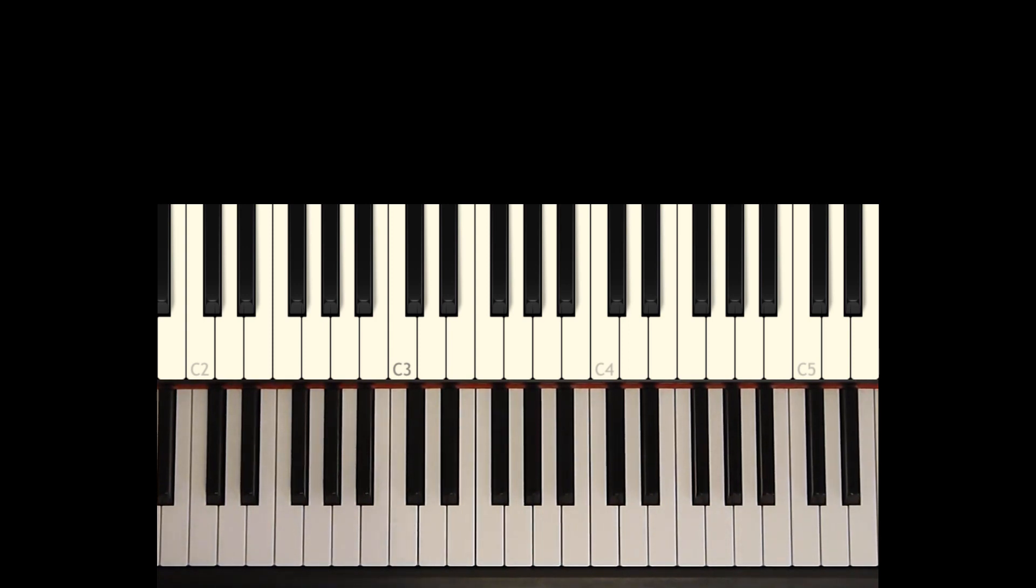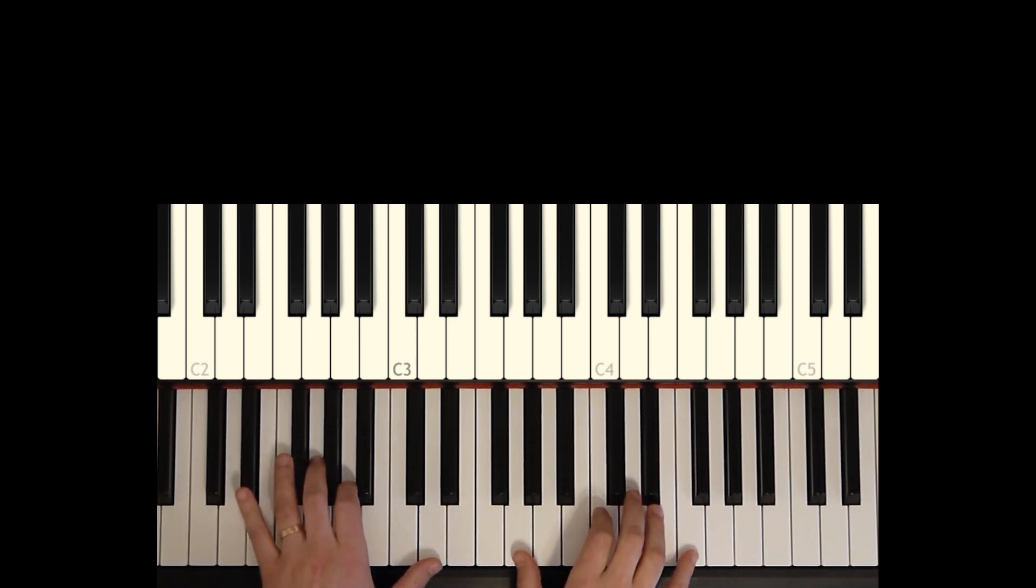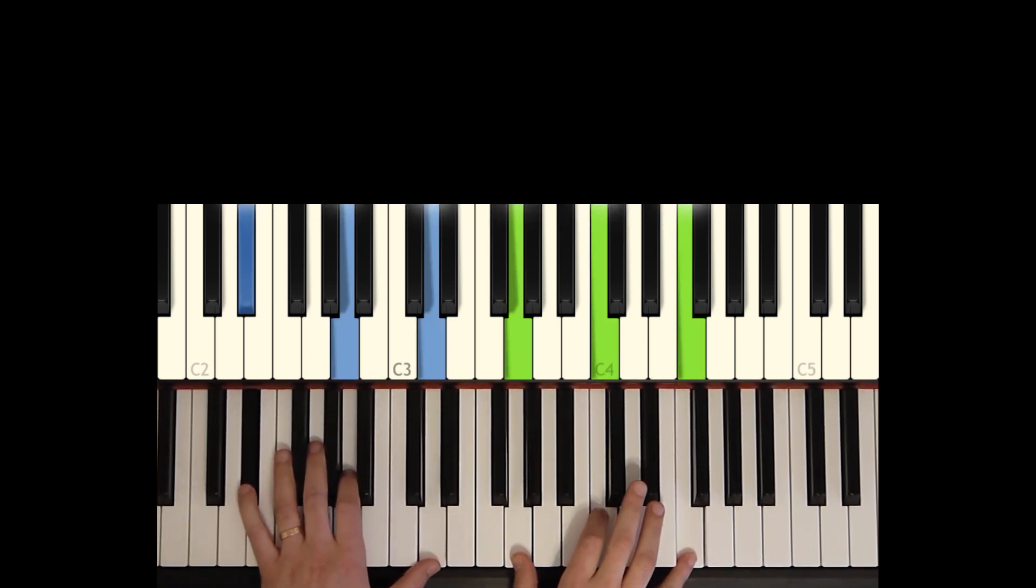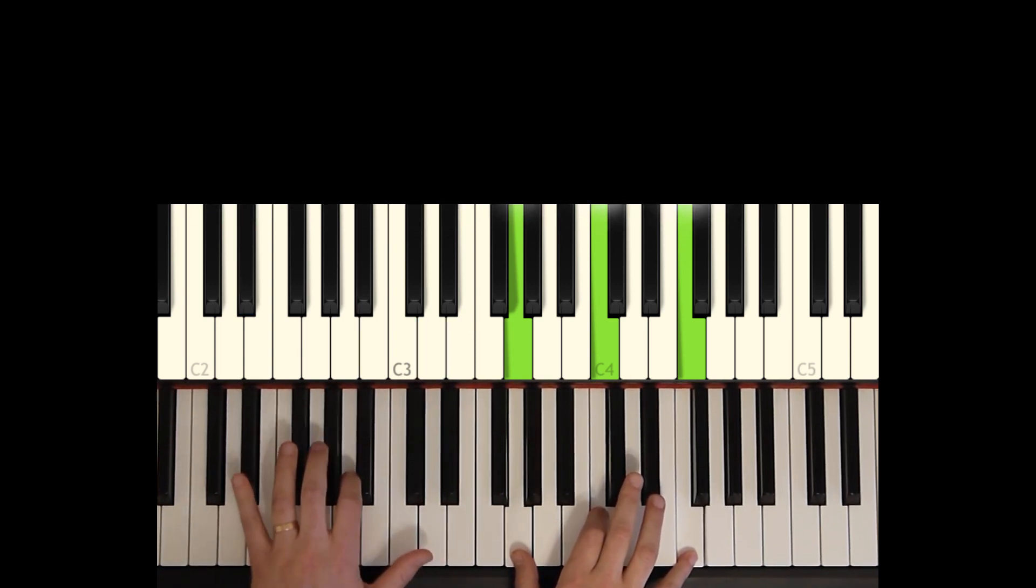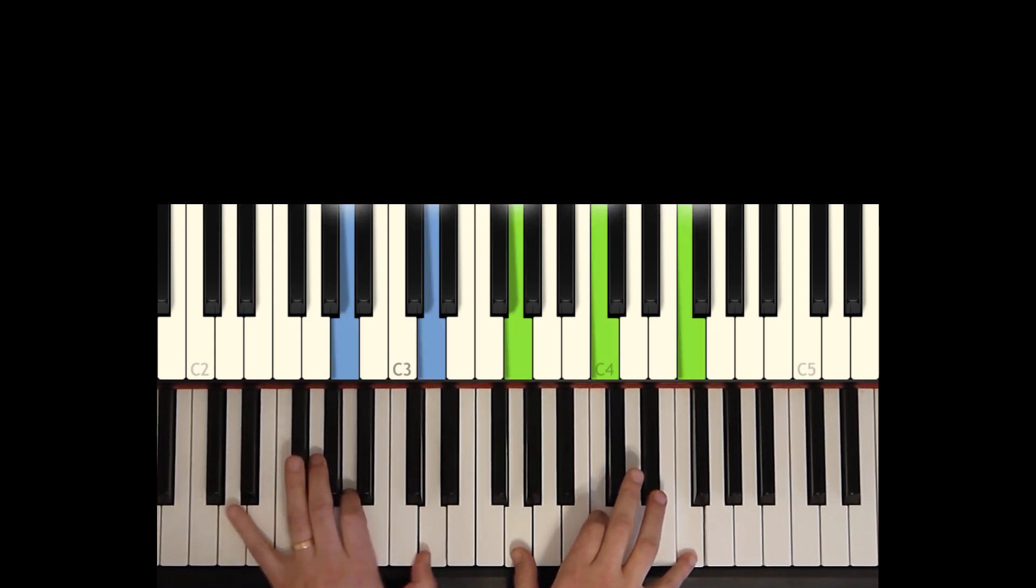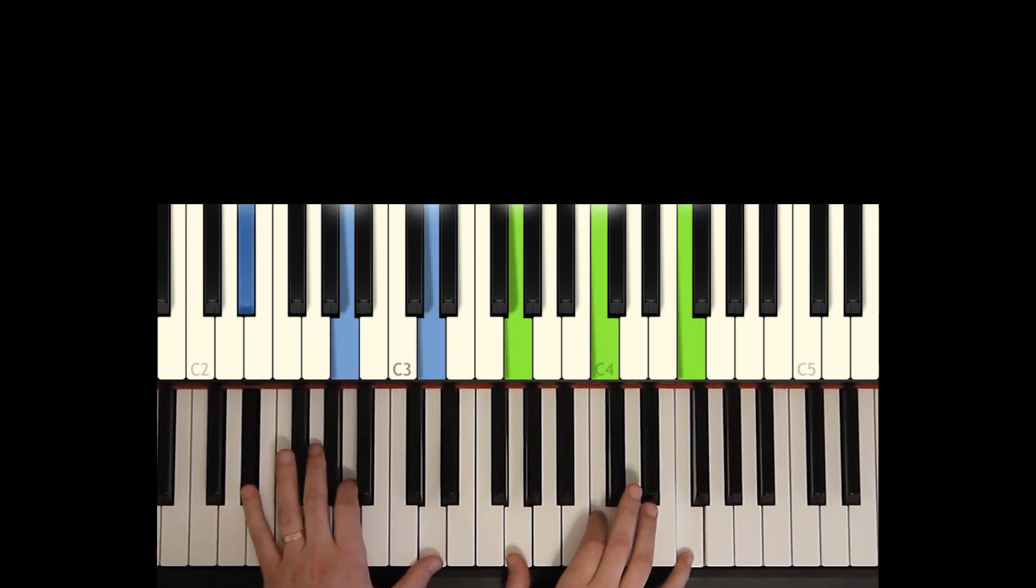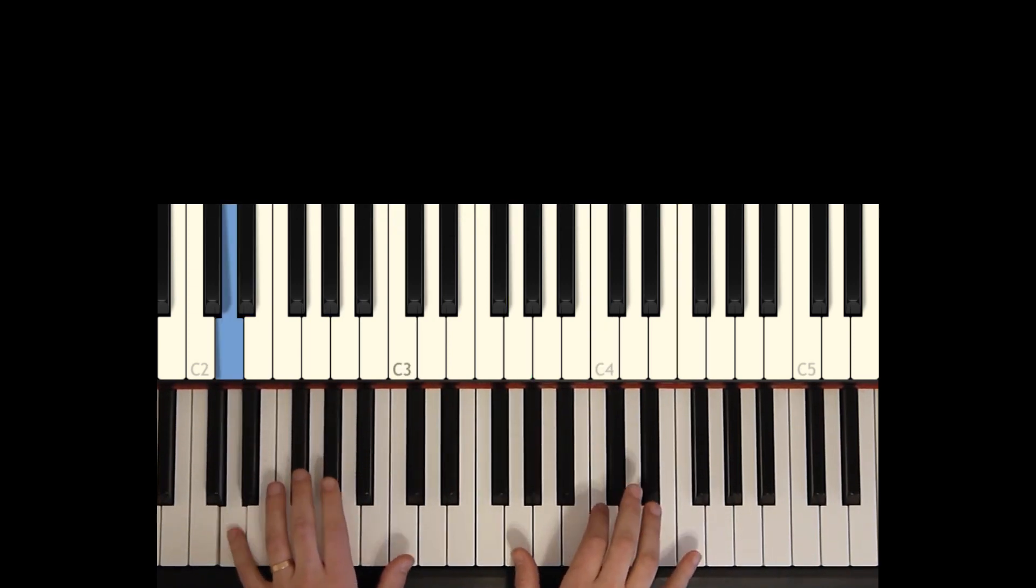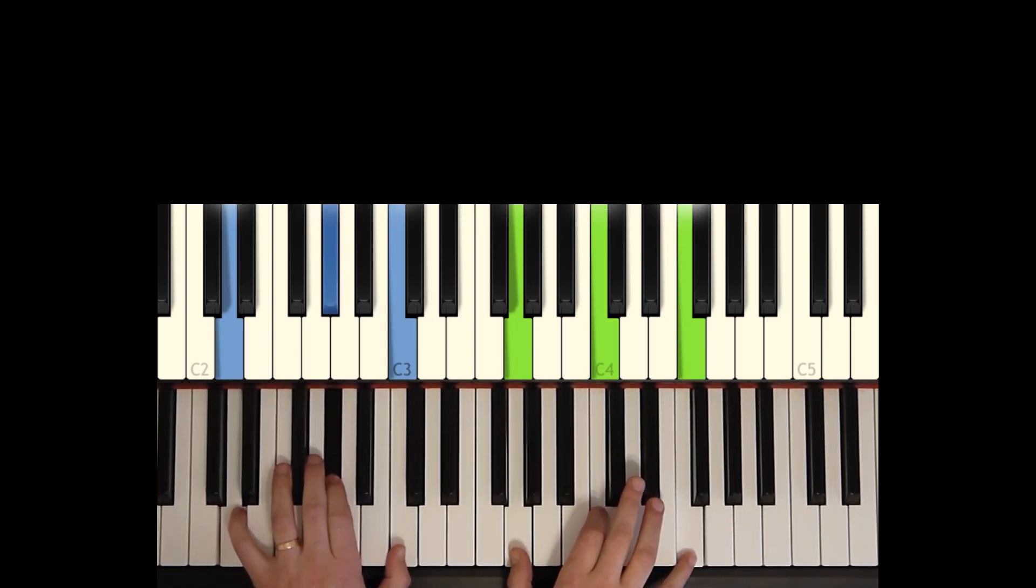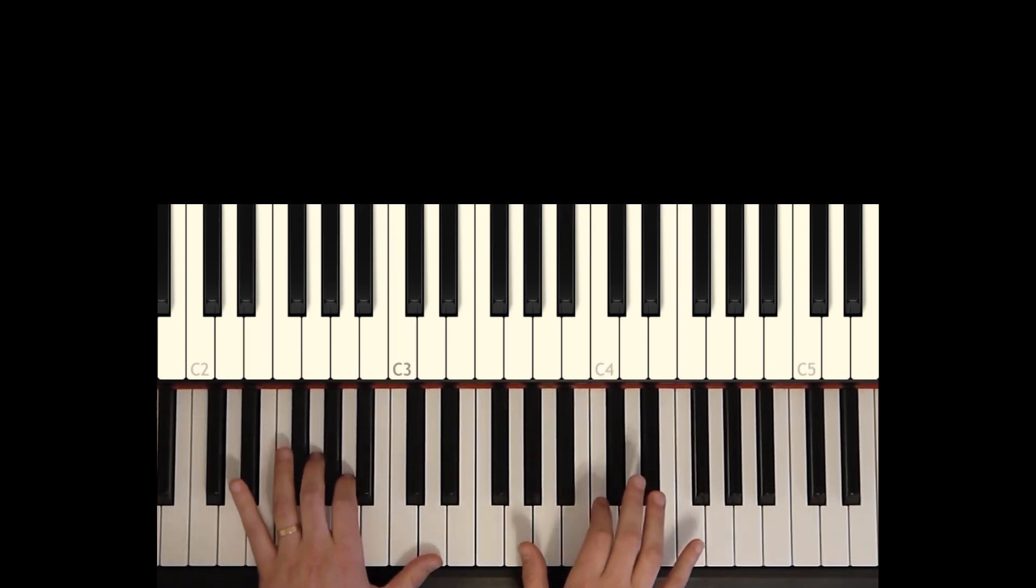One other thing we can do is add grace notes to some of these voicings to give them a little bit more flavor. So what I mean by that, let's take that first F7. Sometimes I'll play the bottom note of the voicing before the rest, just right before rhythmically to give it a little bit of momentum. Do something like that. So that's one grace note that we can add, just taking the bottom note and just playing it just before.